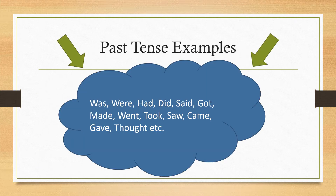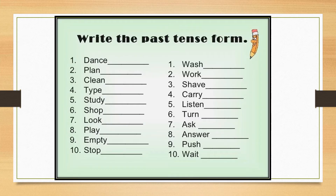More past tense examples: was, were, had, did, sat, got, made, went, took, saw, came, gave, thought, etc. Now write down the past tense forms of the following verbs.